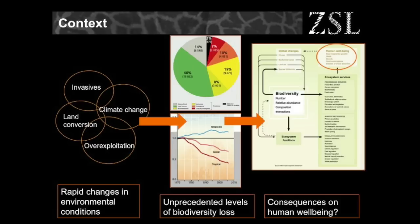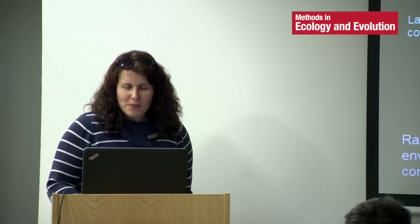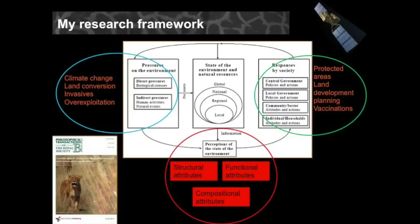Traditionally, you have observed rapid change in environmental conditions, which are leading to unprecedented levels of biodiversity loss reported by various institutions and captured by different metrics. That may have some implication for ecosystem services delivery and altogether human wellbeing, which is all of us. So it's a completely self-centered interest, really. My research framework — I generally like to fit what I do within the framework that the CBD used, the Convention on Biological Diversity.